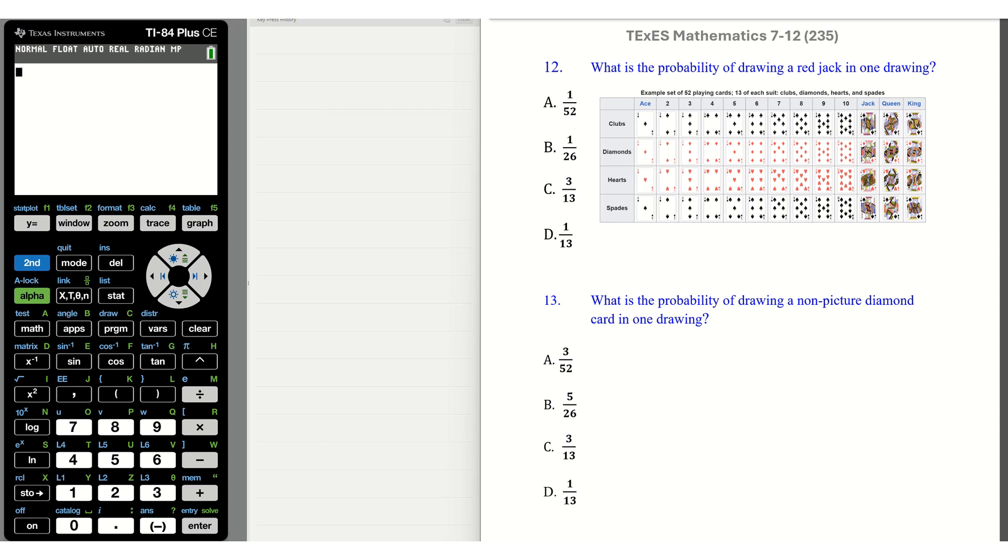Number 12. What is the probability of drawing a red jack in one draw? Okay. How many red jacks do we have? We have, let's see, red jacks right here. Two. So that would be two out of 52 in one drawing. Okay. Two out of 52 in one drawing. Push enter. Math. Enter. Enter. 1 out of 26.